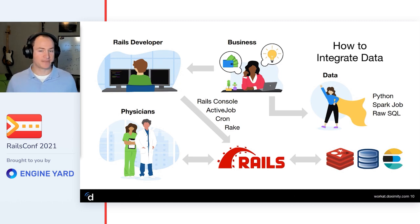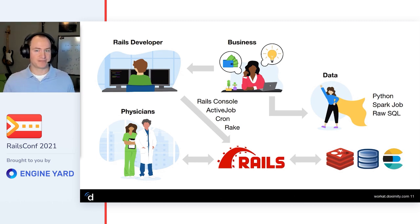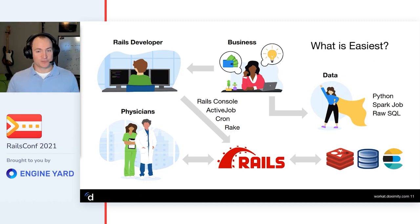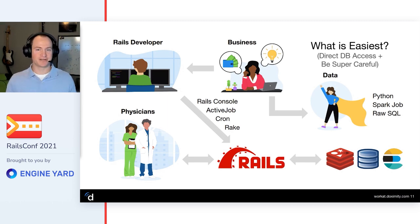How do we integrate these data specialists - who use Python, Spark jobs, raw SQL - into our existing Rails monolith application so that what they're doing gets piped through our rich domain models? I'll tell you about the steps we took to accomplish this. The first question I ask is: what is the easiest way to do this?